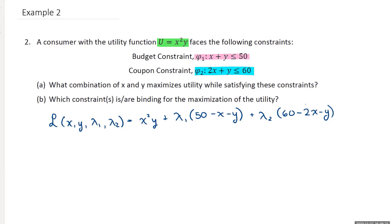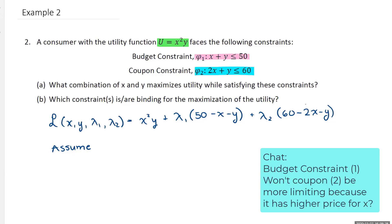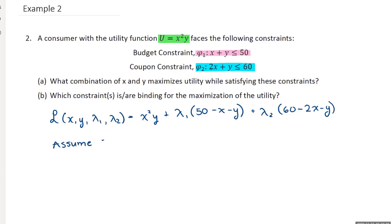Now what I'm going to do is assume one of my constraints will be naturally satisfied. Which one do you guys want to assume is naturally satisfied? So Evan is using some good sense. He believes that budget will naturally be satisfied and the coupon constraint will be more limiting as there's a heavier weight on x here, and our utility has a higher weighting on x. So I'm going to go with Evan and say, okay, let's assume that constraint 1 will naturally be satisfied.